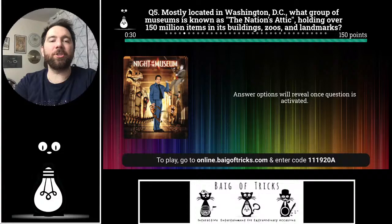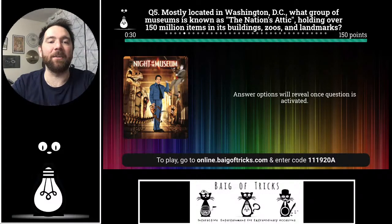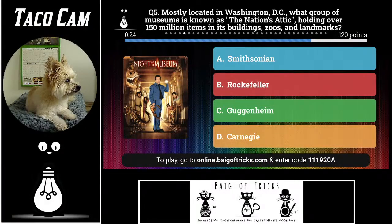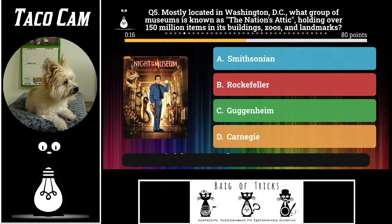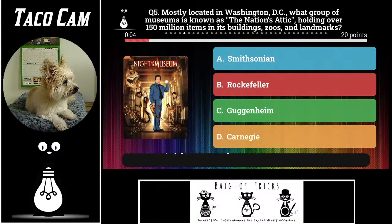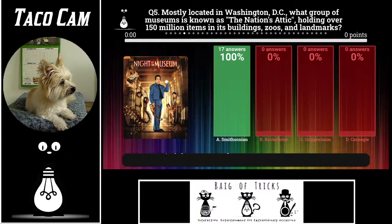Number five: mostly located in Washington D.C., what group of museums is known as the Nation's Attic, holding over 150 million items in its buildings, zoos, and landmarks? Is it Smithsonian, Rockefeller, Guggenheim, or Carnegie? We're going to have another perfect answered question — and yes, officially we do. 17 of you correctly said the Smithsonian. Great job every single one of you.